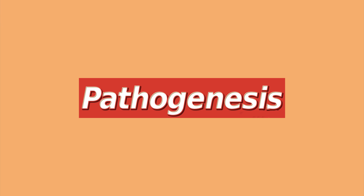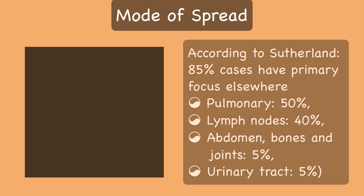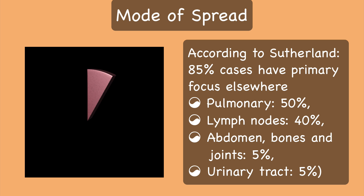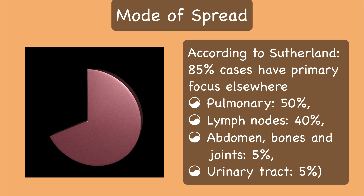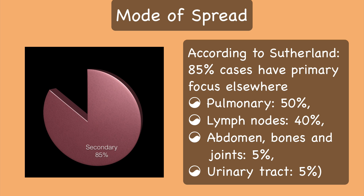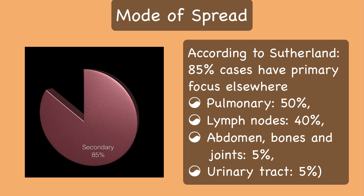Genital tuberculosis is usually secondary to a primary focus elsewhere in the body as said earlier. According to Sutherland, 85% of cases of genital tuberculosis are secondary to a primary focus elsewhere, which may be pulmonary 50%, lymph nodes 40%, abdomen, bones and joints 5%, and urinary tract 5%.